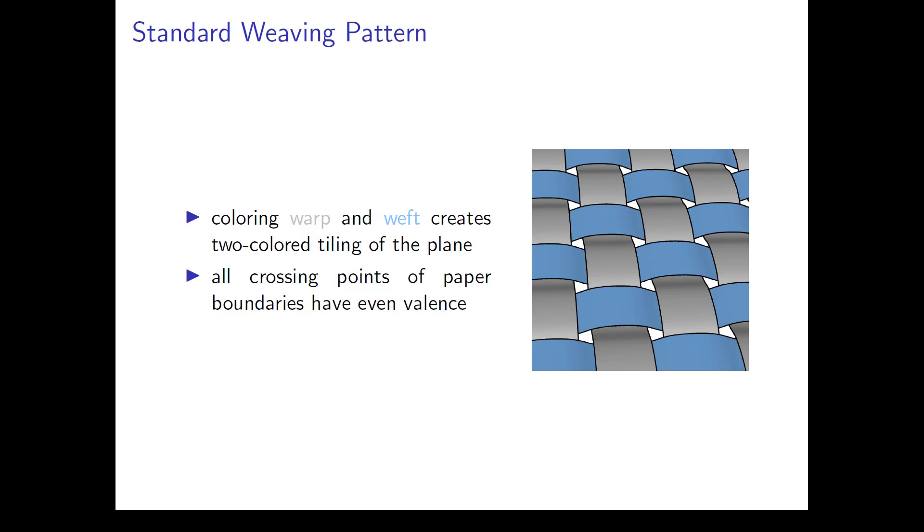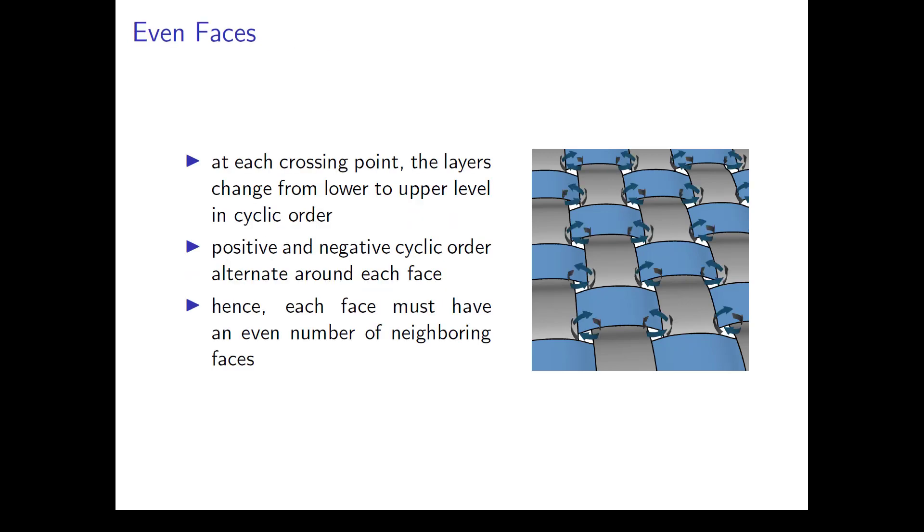At all crossing points of the paper boundaries, the checkerboard has an even valence. At each of these crossing points, the paper strips change from the lower to the upper level in cyclic order. The positive and negative cyclic order alternate around each face. So every face has an even number of crossing points and therefore also an even number of neighboring faces.